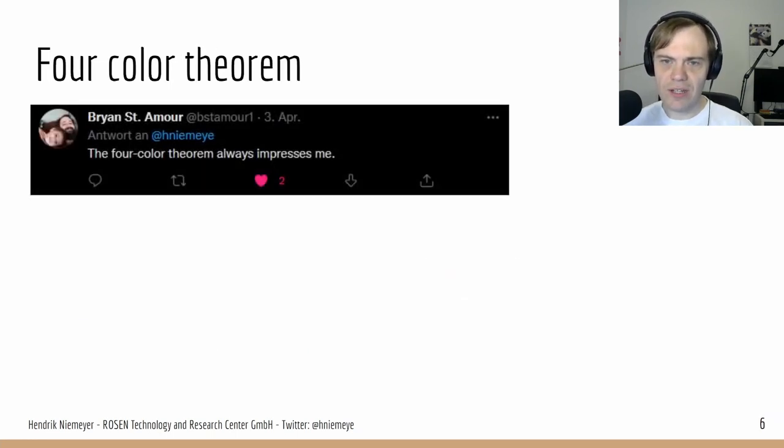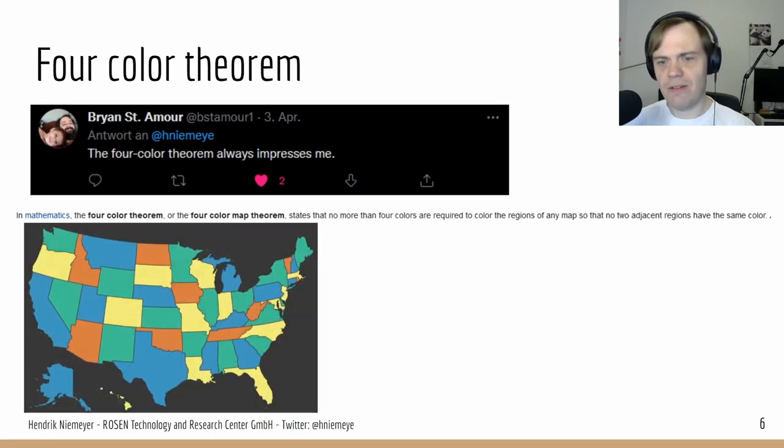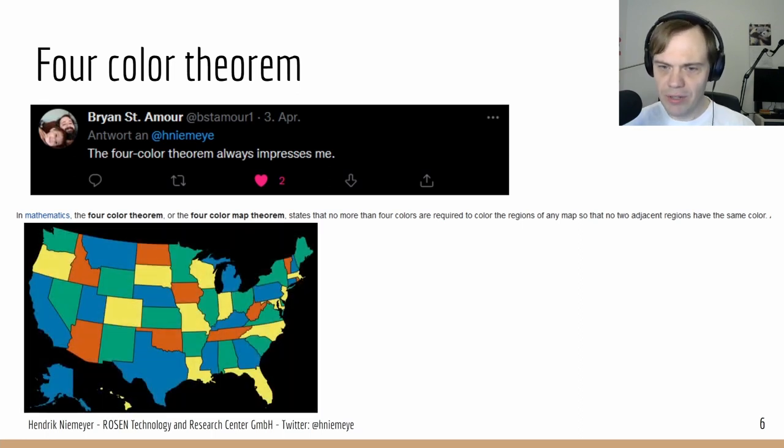Brian suggested the four-color theorem: the fact that you only need four colors to color in a map without neighboring elements having the same color, illustrated here by looking at the map of the United States. This is pretty surprising. If you don't know that theorem, you might have thought you need more colors, but it's only four.